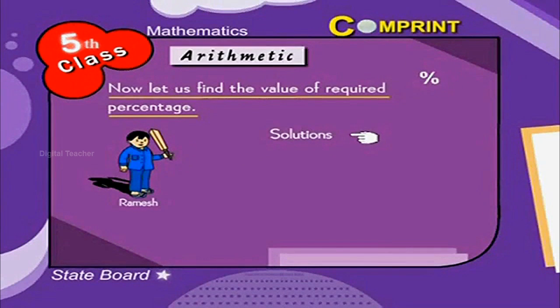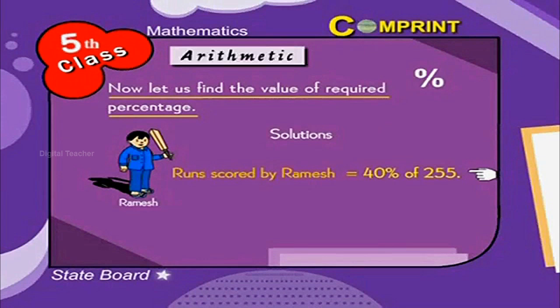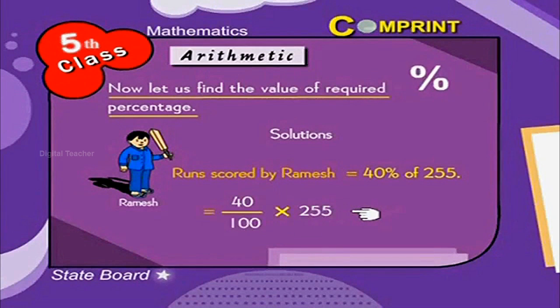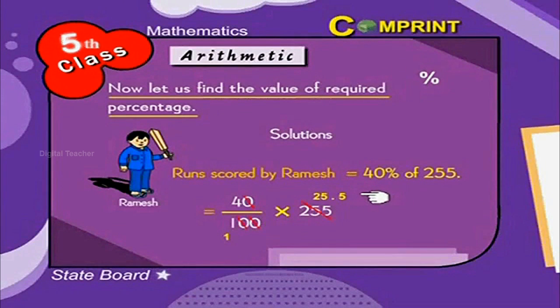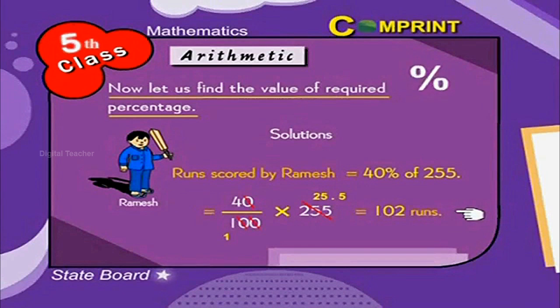Here is the solution. Runs scored by Ramesh is equal to 40% of 255. This can be written like this: 40 by 100 into 255. First, cancel the zeros. Now divide the number 255 by 10. We get 25.5. Now multiply the number with 4. We get 102. Therefore, runs scored by Ramesh are 102.